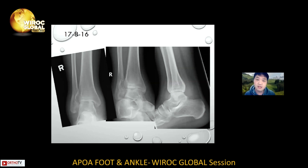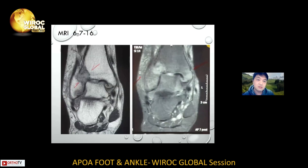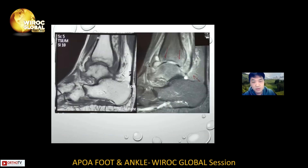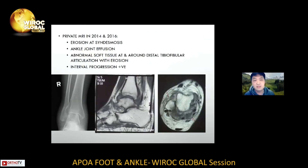This is the X-ray taken in 2016. You can see progressive erosion around the syndesmosis, affecting more on the fibular side, and the joint space was narrowed. A private MRI was performed again. This shows the coronal view, the sagittal view, and the axial view. The report noted erosion at the syndesmosis and ankle joint effusions.